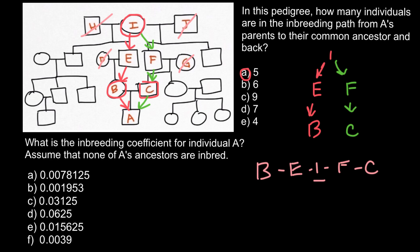Next question: What is the inbreeding coefficient for individual A? Assume that none of A's ancestors are inbred. Because none of the ancestors of A are inbred, we can use the simplified formula.